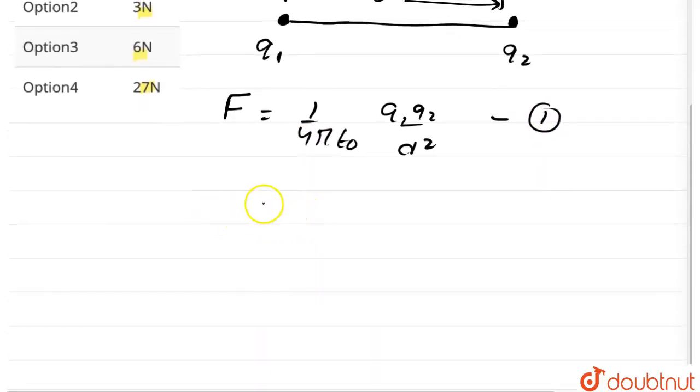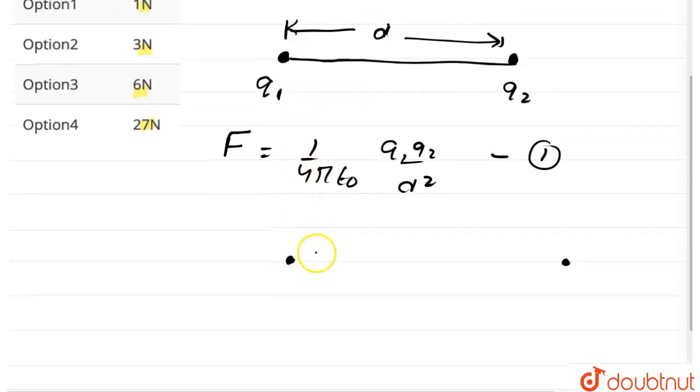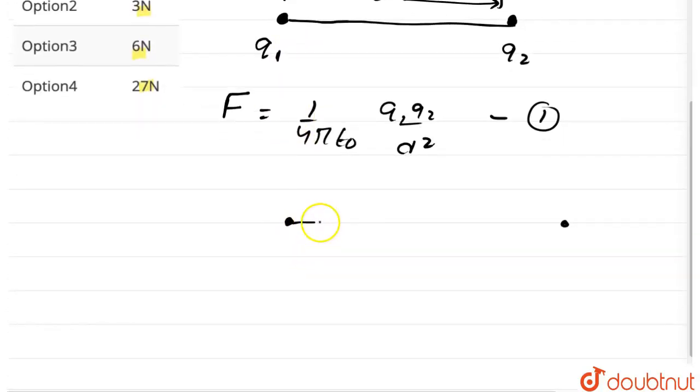Now, it is said that the distance between the charges is 3d. So the new distance is 3d. The charges are still the same q1 and q2.